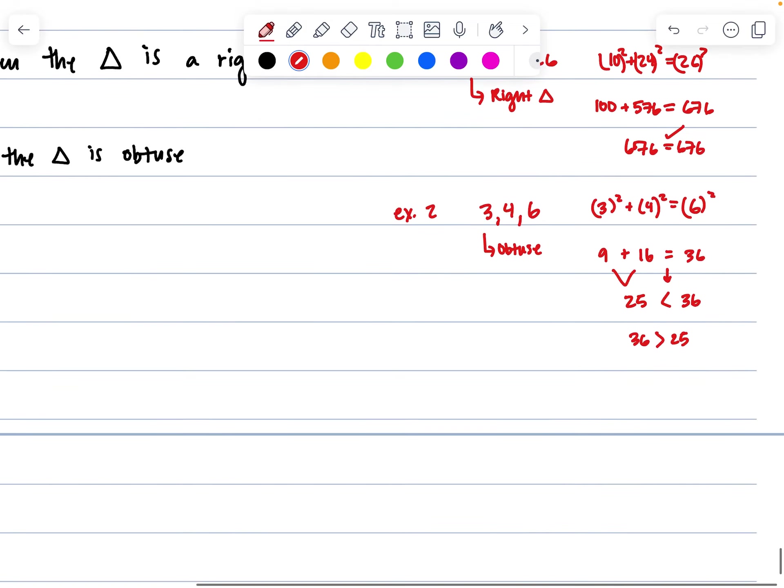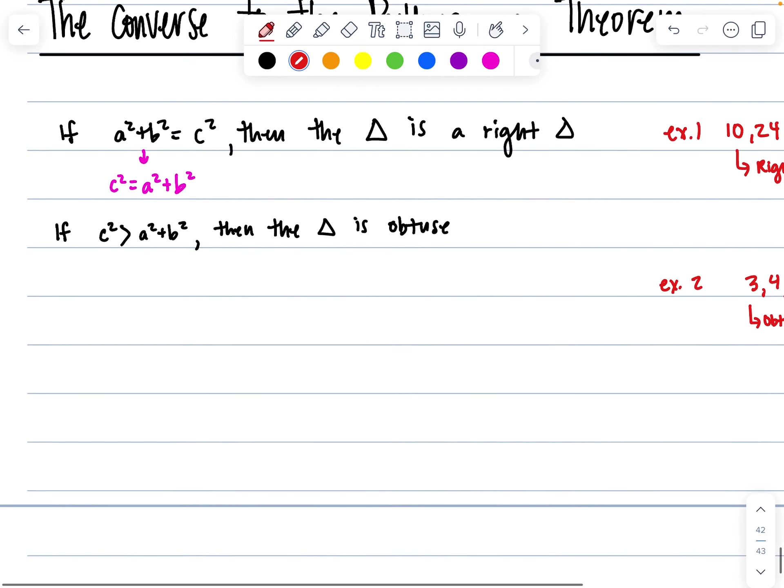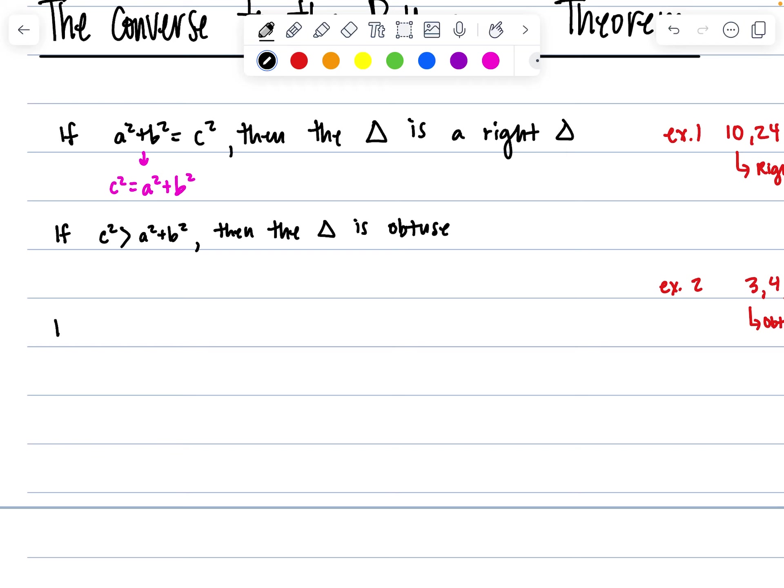And last but not least, I'm kind of running out of room there, so let's see if we can squeeze it in underneath this. If I'm going to rewrite it like this again, the other version of this, c squared is less than a squared plus b squared, it'd be safe to assume, then the triangle is acute.